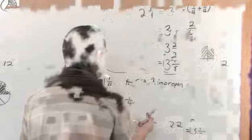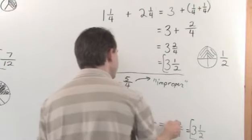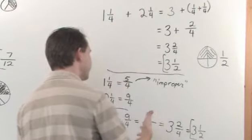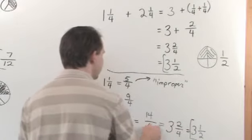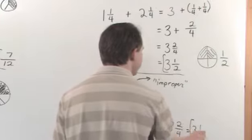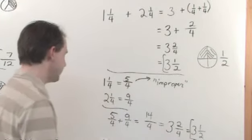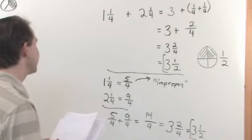Which is what you want to do on your test. You do that by dividing. 14 divided by 4 gives you 3 with a remainder of 2 because 3 times 4 is 12. The difference between 12 and 14 is 2, so 2 fourths. You got to keep that fourths here. And then you just simplify the 2 fourths into 1 half, just like that.